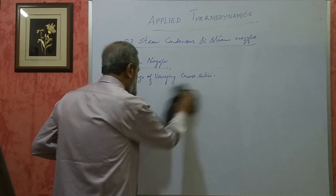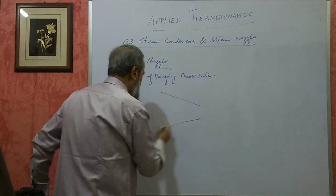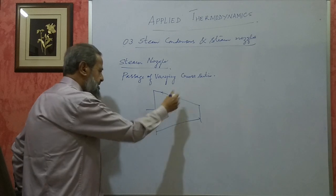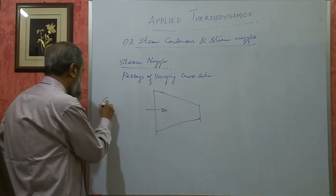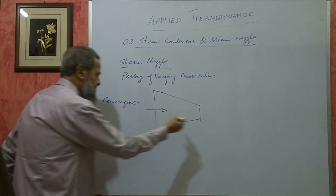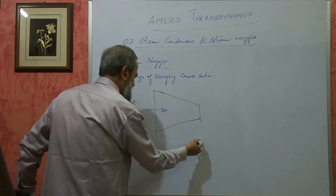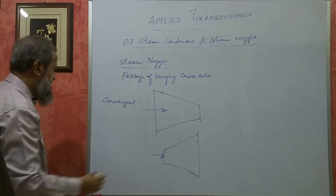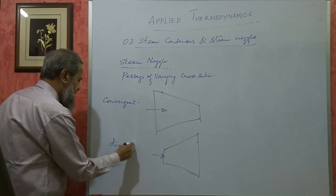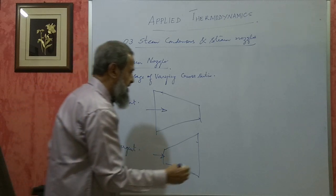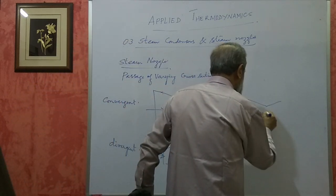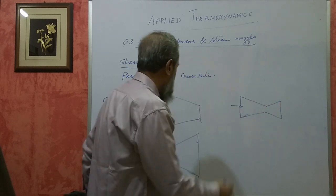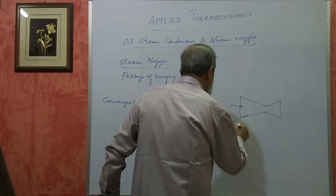Since a nozzle has varying cross section, it will have different areas at different places. If the area is gradually reducing from entrance to exit, you call it a convergent nozzle. If the area of cross section is gradually increasing from entrance to exit, you call that a divergent nozzle. It may also be a combination - where the area first decreases then increases - that is called a convergent-divergent nozzle.